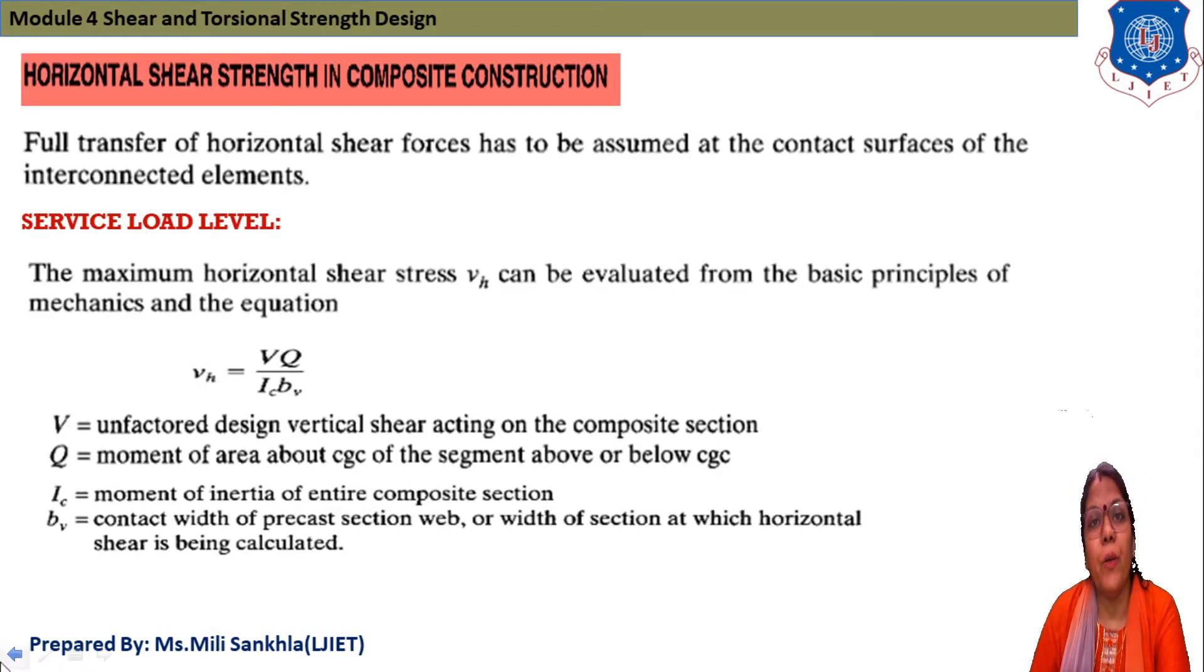Now we start with our new topic: horizontal shear strength in composite construction. For shear strength, full transfer of horizontal shear force has to be assumed at contact surface of interconnected elements at service load level. Maximum horizontal shear stress vh can be calculated. On the basic principle, vh = VQ/(Ic·bv).